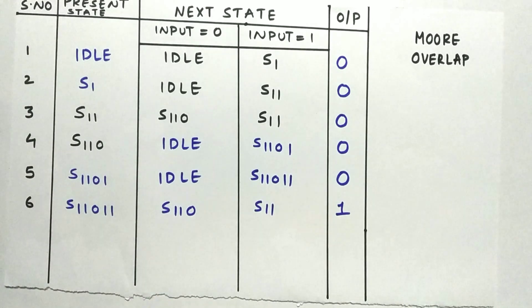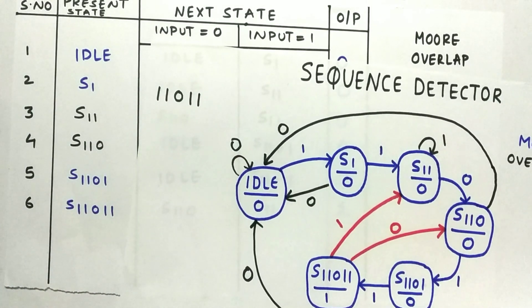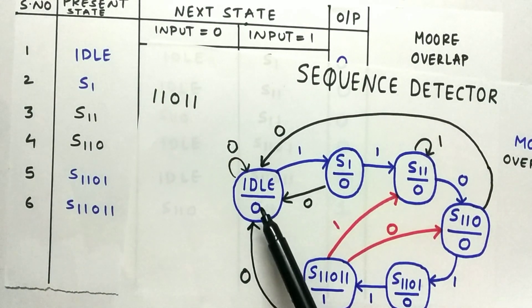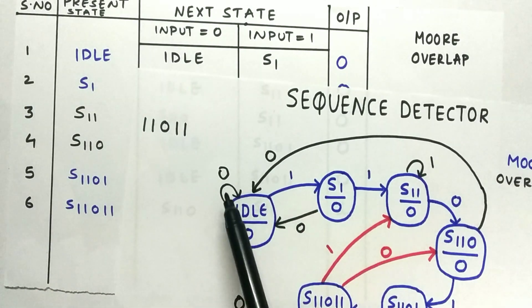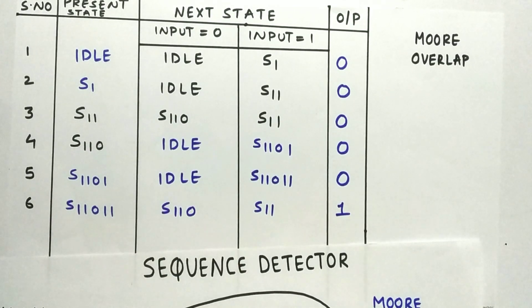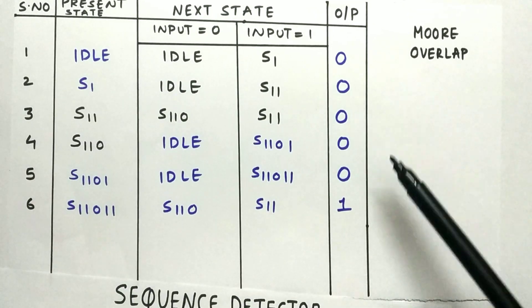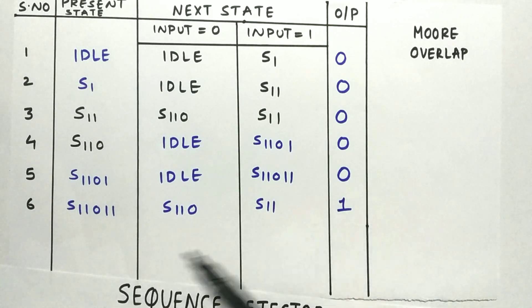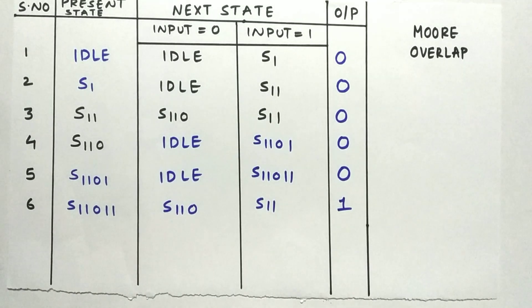I have drawn the state table using the state machine. When in Idle and the input is 1 we move to S1; otherwise we stay in Idle. The state machine is represented in state table format, and the output is high only in the S11011 state. From this transition table you can draw an excitation table, perform a K-map operation, and draw the circuit.